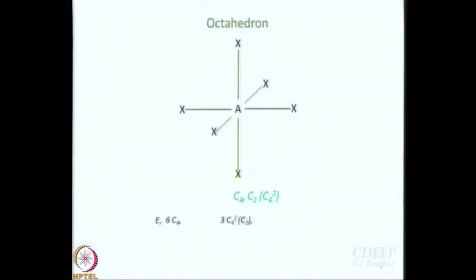How many such axes are there? Three — x, y, z. How many operations? C4, C4 squared is C2 — we classify it separately — and then C4 cubed is another operation. So these are the operations: 6 C4, and you can also get 3 C2s arising out of there, where each C2 is basically C4 squared.